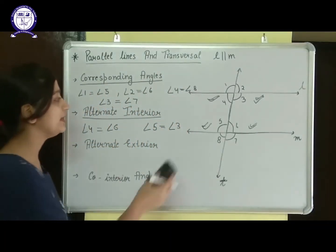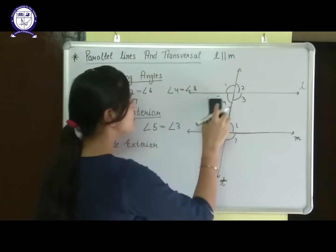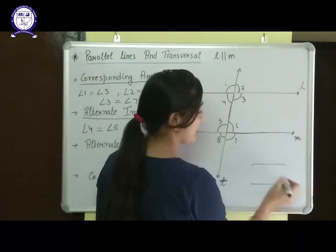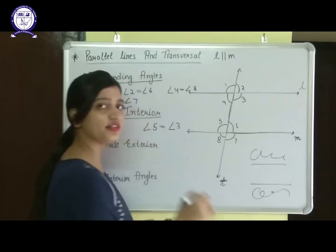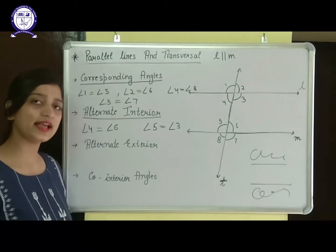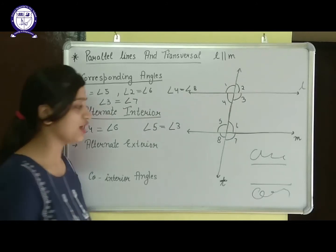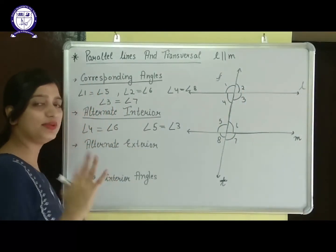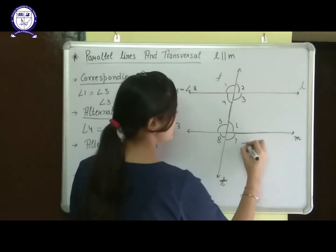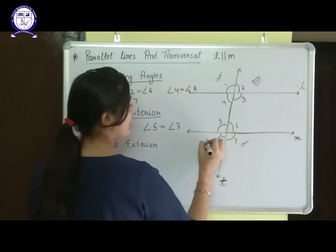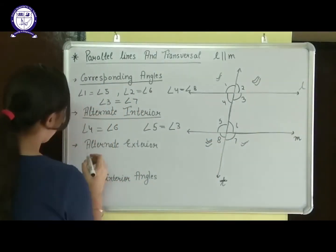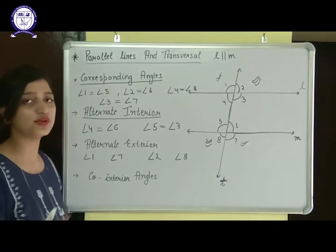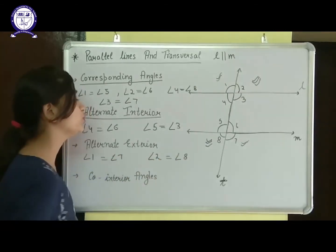The third rule is alternate exterior angles. Exterior angles are those formed on the outer part of the parallel lines — not between them. Alternate again means on the opposite side of the transversal. So angle 1 and angle 7 are alternate exterior angles, and angle 2 and angle 8 are alternate exterior angles. The property is that they are also equal to each other.